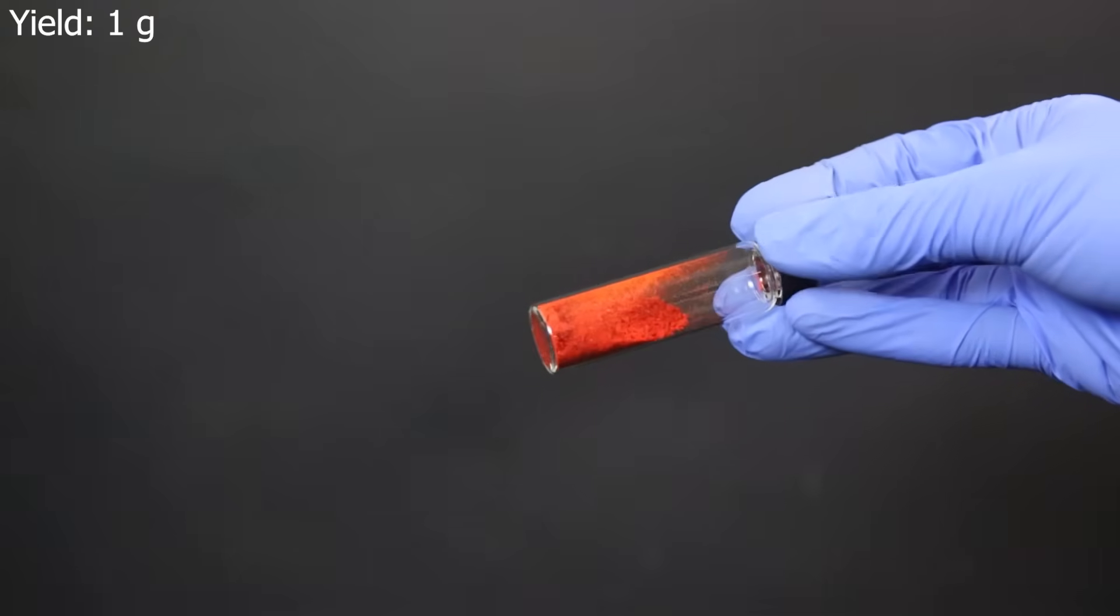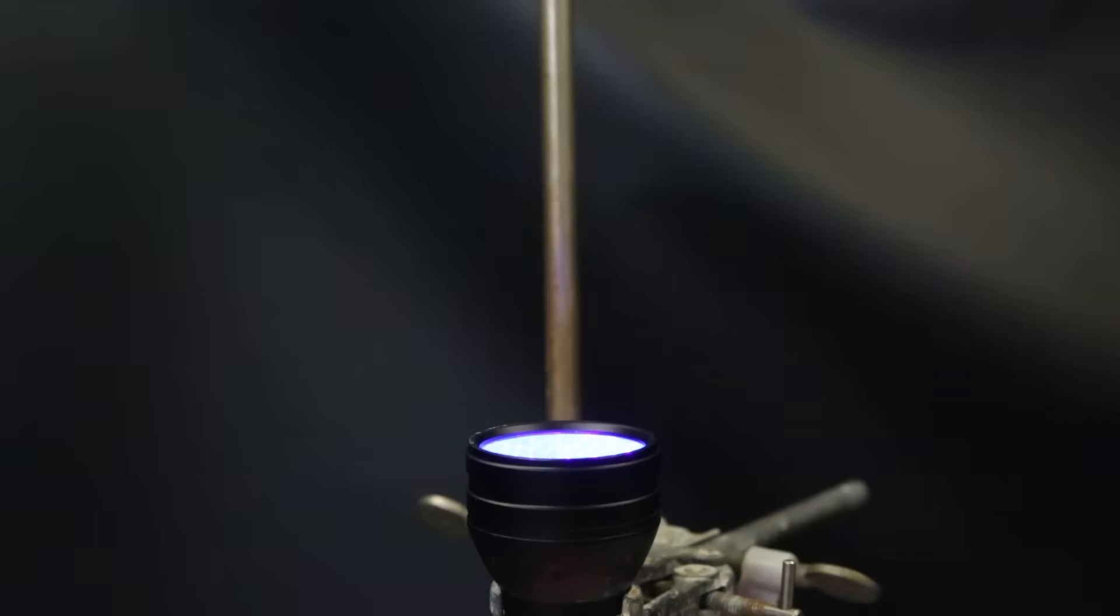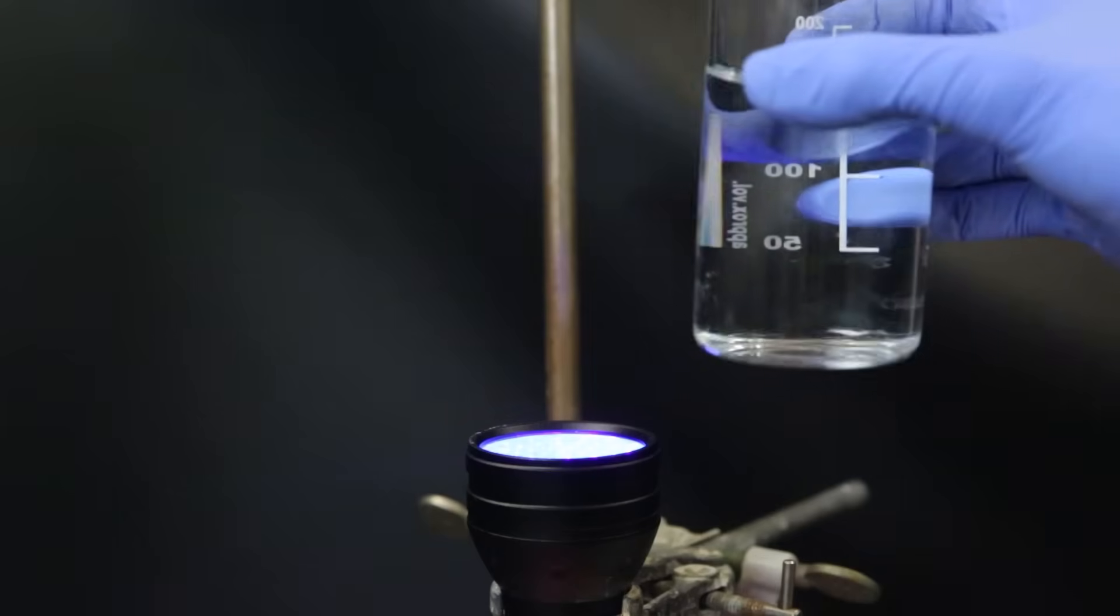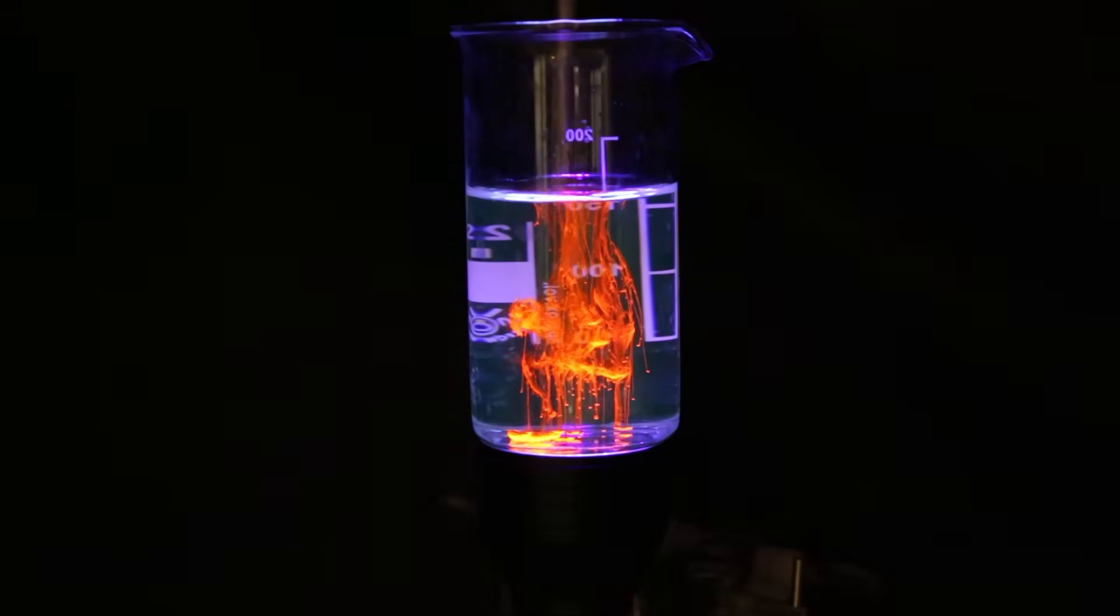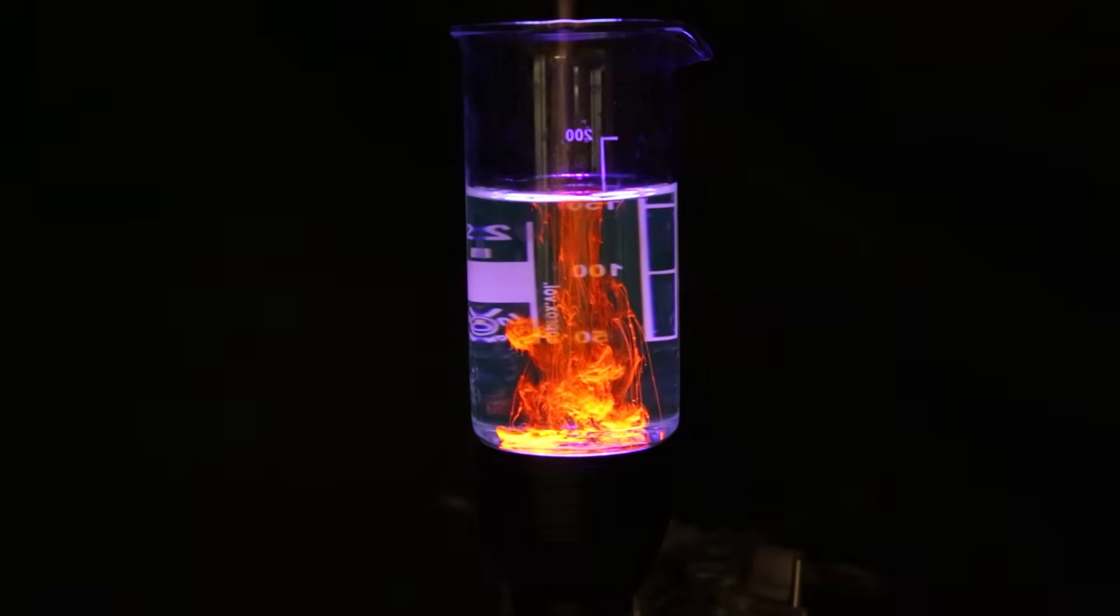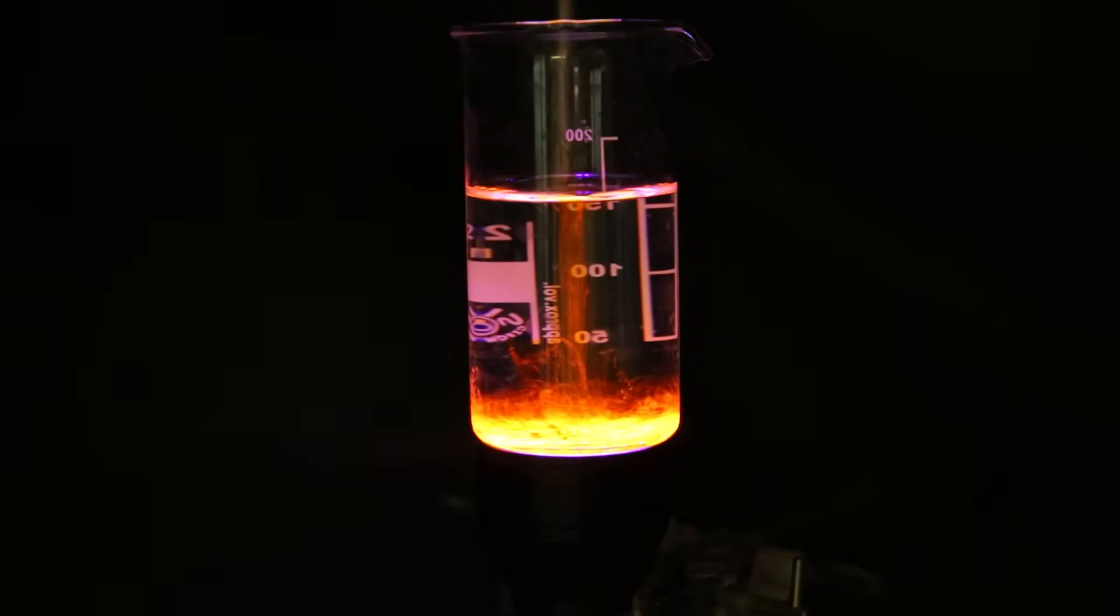Now since the ruthenium complex of bipyridine is known for its optical properties, we can test it. So I set up a UV flashlight and put a beaker filled with water on top. Now I add a small bit of the ruthenium complex to the water, and we can immediately see it emits a bright orange light due to its fluorescent properties.